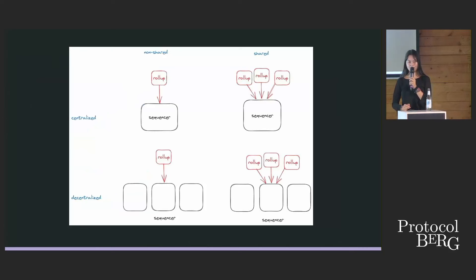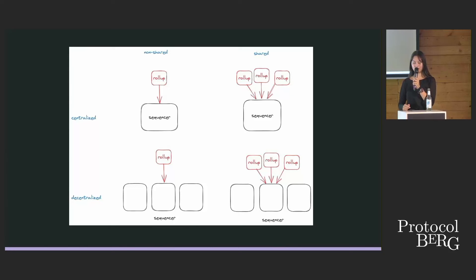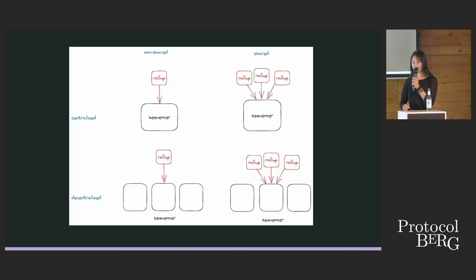Currently, what do sequencers look like? You have a centralized sequencer — basically just one entity running — and it's also non-shared, so you just have one rollup running per sequencer. You can also have a centralized and shared sequencer, where it's one entity but supports multiple rollups. And then you have decentralized as well, where more than one entity creates rollup blocks, and similarly it can be non-shared or shared. What we're moving towards is the bottom right: decentralized and shared by multiple rollups.